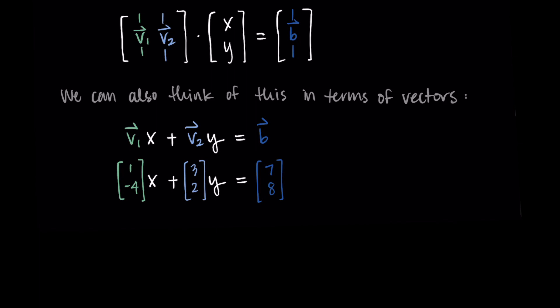We have the coefficient matrix and the vectors. So in general, the equation Ax equals b represents the following.